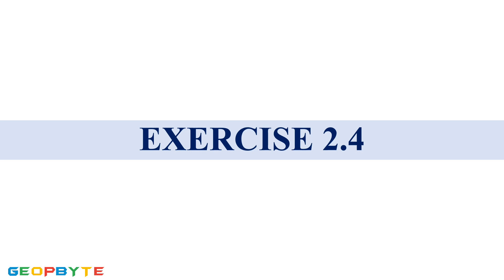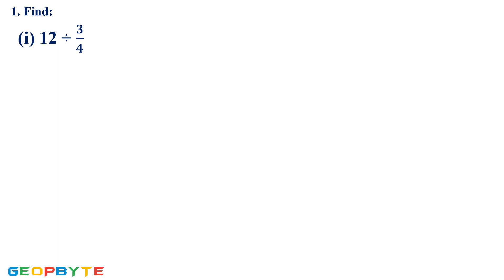Hello students, welcome to Geobyte. In the previous videos we discussed about division of fractions. Today let us see exercise 2.4. First one: find 12 divided by 3/4. Here 3/4 is a fraction, so we need to find the reciprocal of 3/4 and then change the division symbol to multiplication: 12 into reciprocal of 3/4.